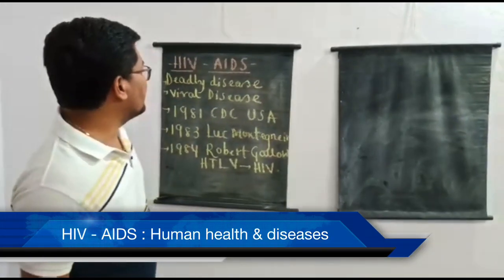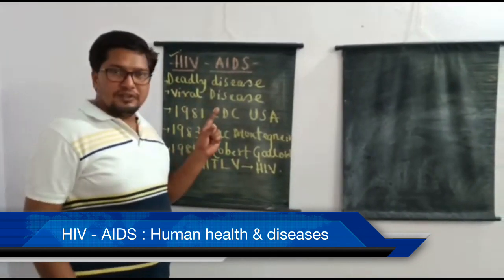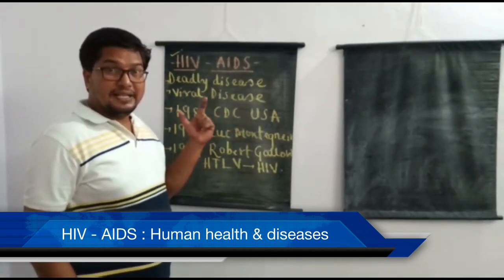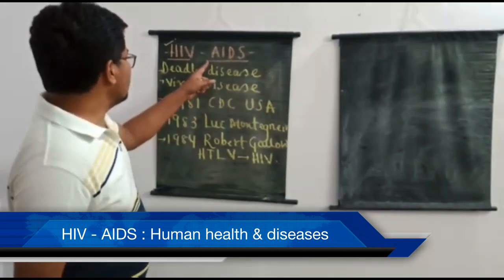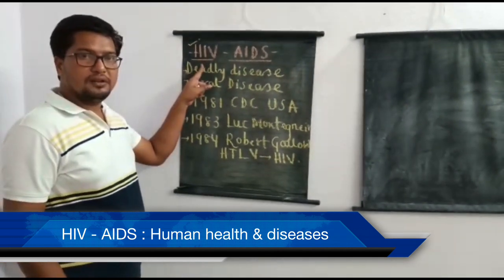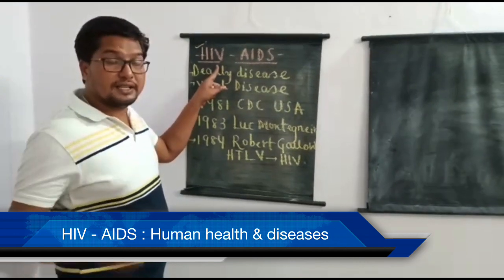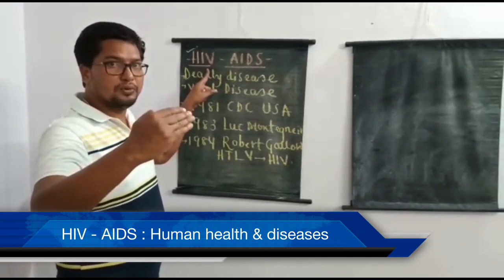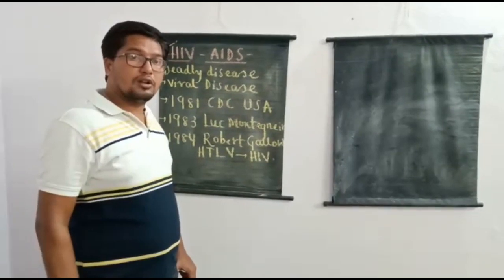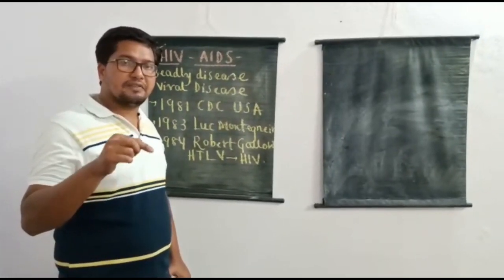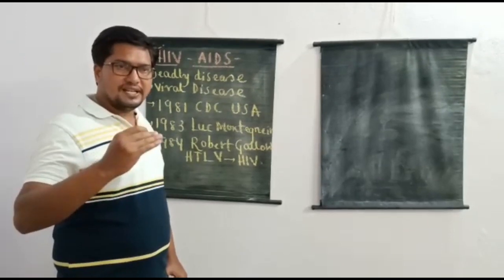Welcome back. In today's video, let me explain the topic HIV AIDS. As we all know, throughout the world, one of the most deadly diseases responsible for the death of more than 2 million people every year is HIV AIDS. HIV stands for Human Immunodeficiency Virus. Initially when a human is infected with HIV, that person is said to be HIV positive. Within some years, HIV progresses into the final stage of infection called AIDS.